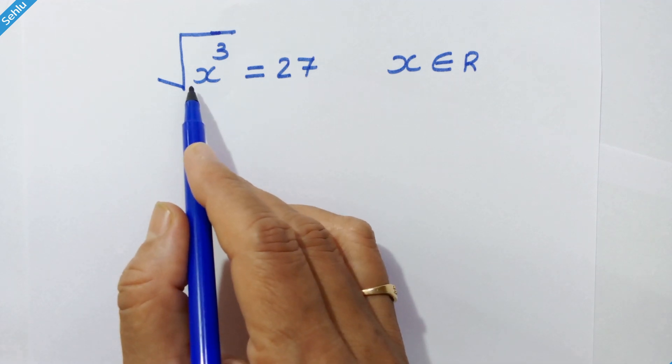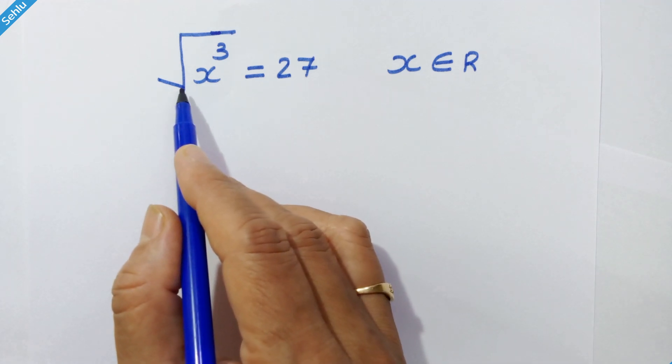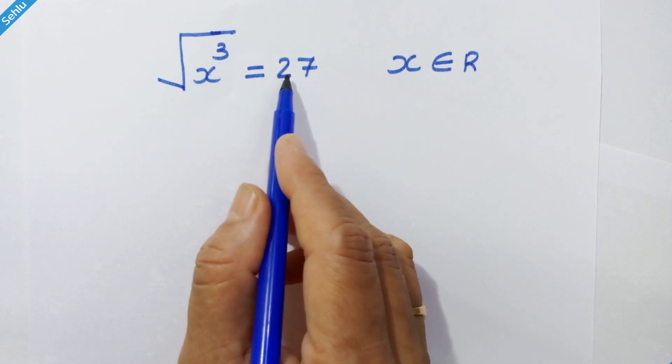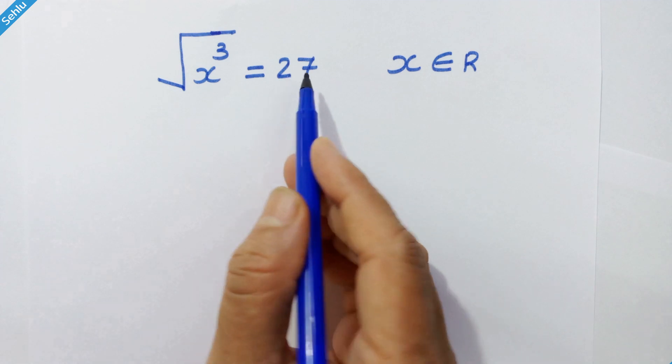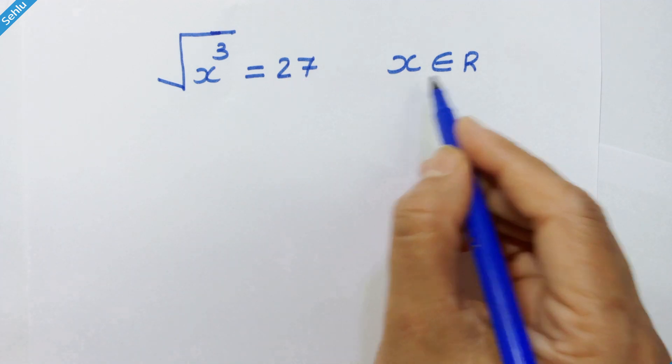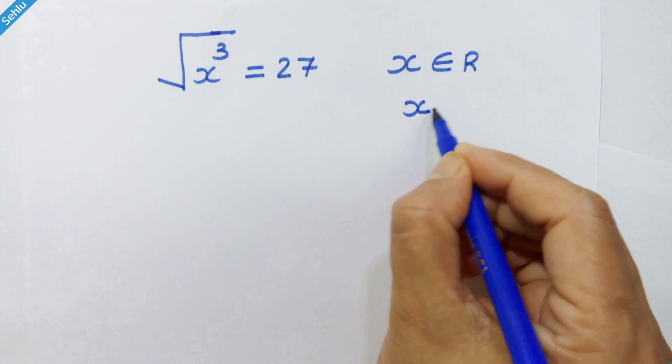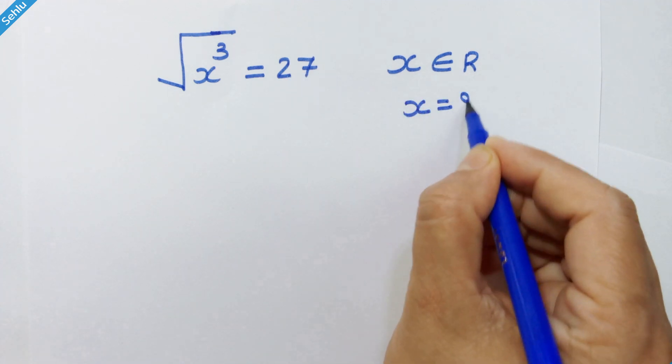Hello friends, here we have square root of x cube is equal to 27, where x is a real number, and let's solve for x.